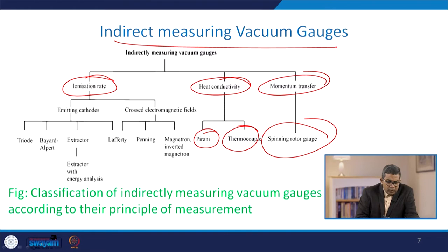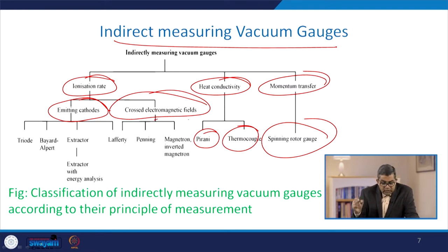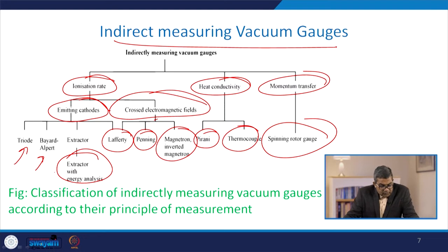Regarding ionization rate, there are two sub-categories: emitting cathodes and gauges based on crossed electromagnetic fields. The crossed magnetic-electric field type is further subdivided into three: Leffert-Leaf, Penning, and magnetron/inverted magnetron. The emitting cathode type is subdivided into triode, Bayard-Alpert, and extractor, with the extractor also referred to as the extractor with energy analysis.